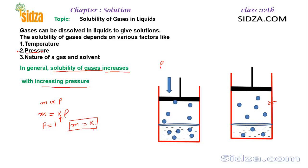This k, the magnitude of this k, depends on certain factors: it depends on the nature of the gas — meaning k will be different for different gases; for carbon dioxide, for nitrogen, for oxygen it will be different. And for the same gas, it will be different at different temperatures. It will also be different for different solvents. So k depends on: number one, the nature of the gas; the temperature of the liquid; and the nature of the solvent.